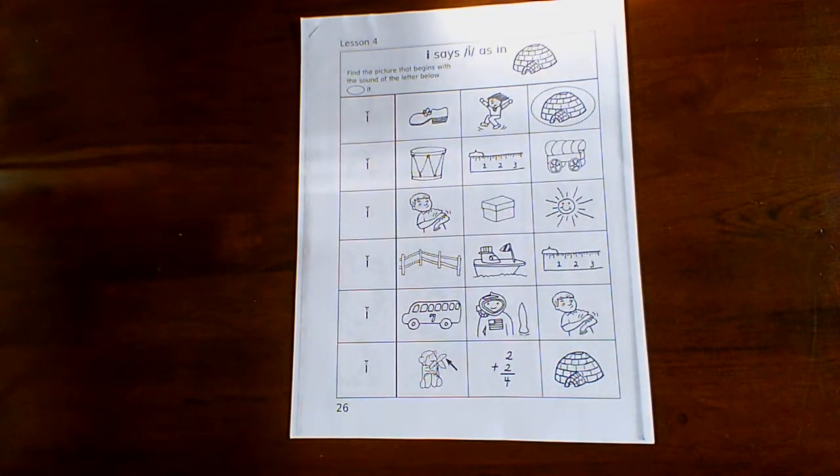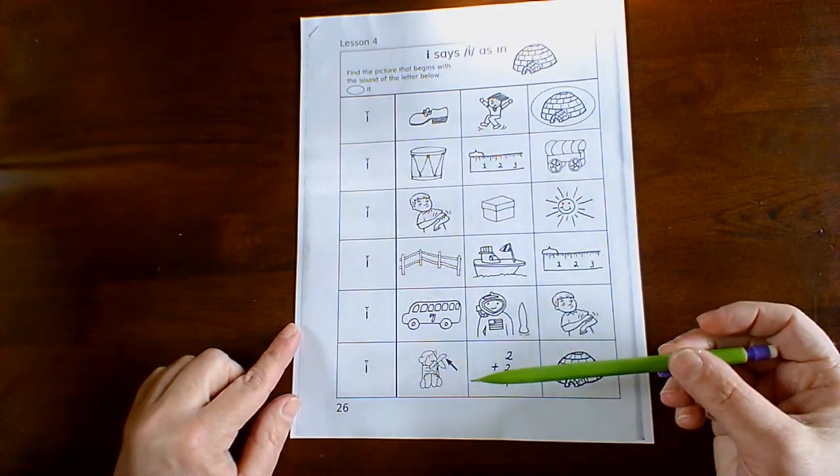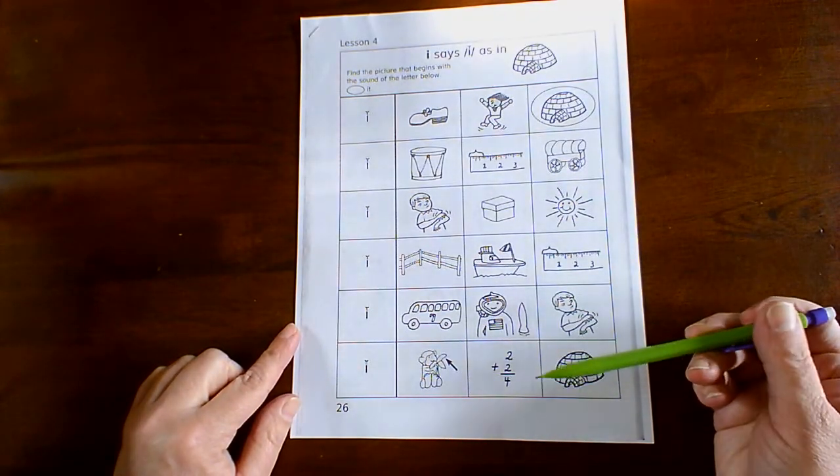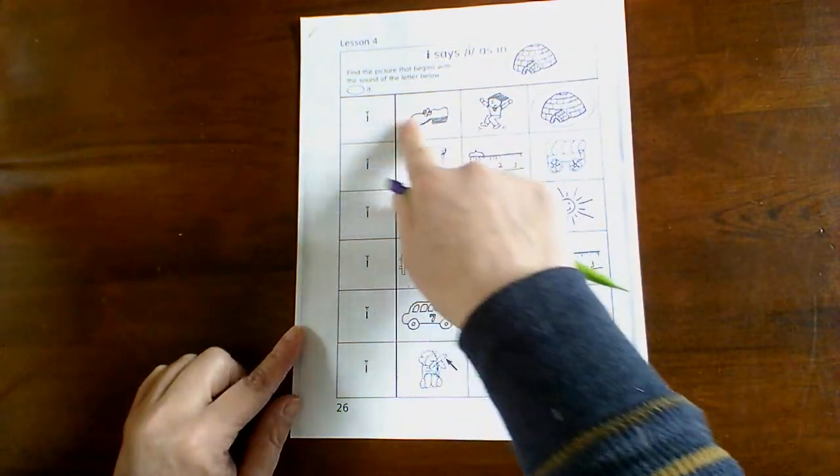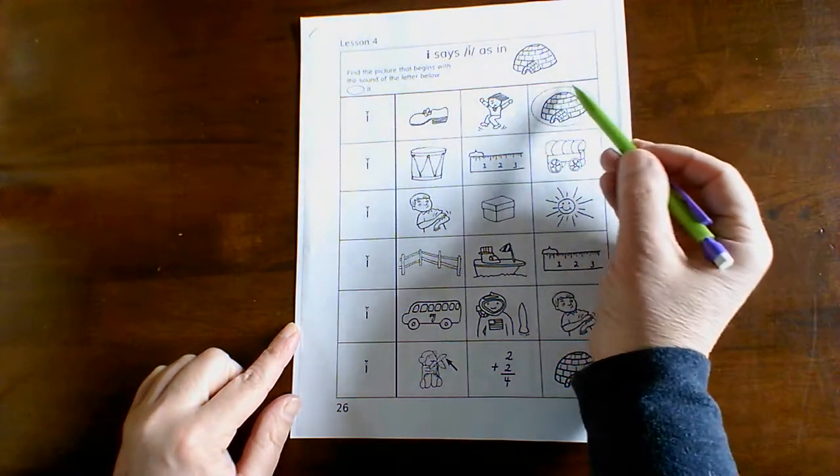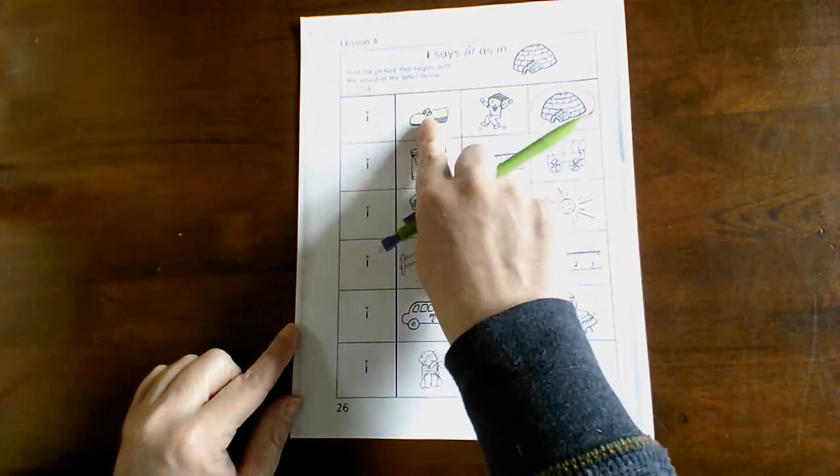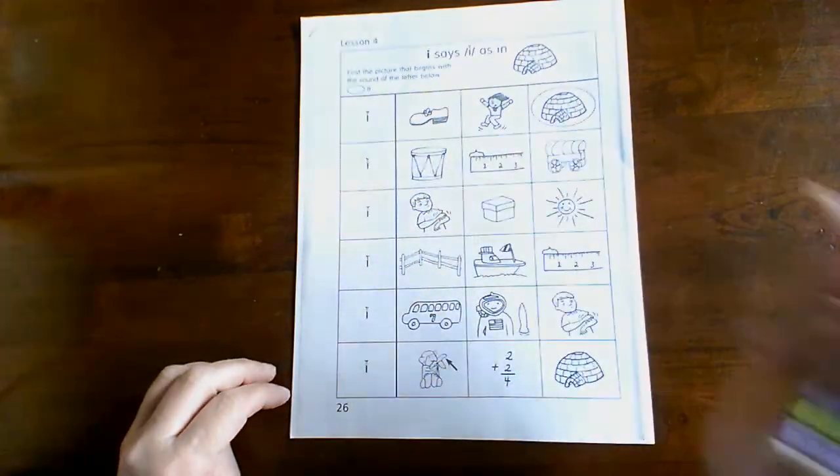So we're going to be working on this page with pictures that start with the I sound. In each row, we're going to find the picture that begins with the I sound and circle it like they did here. Like shoe, jump, igloo, I, I, igloo.